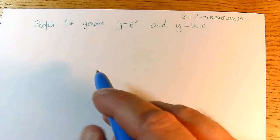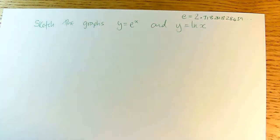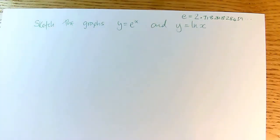e is the number 2.71828. And y equals e to the x is a really interesting function because it's its own gradient.